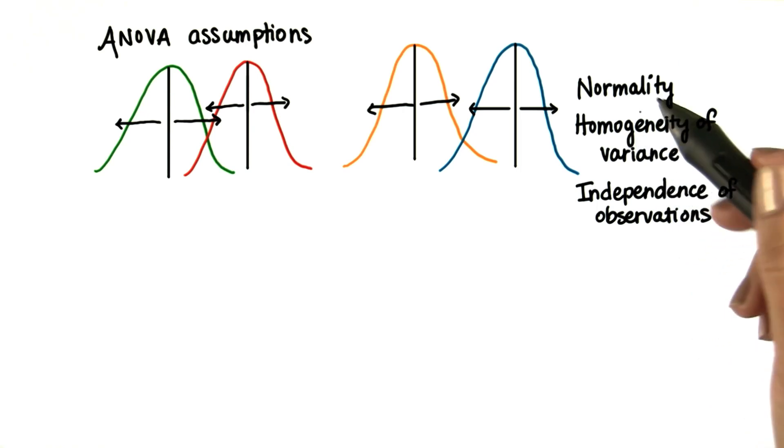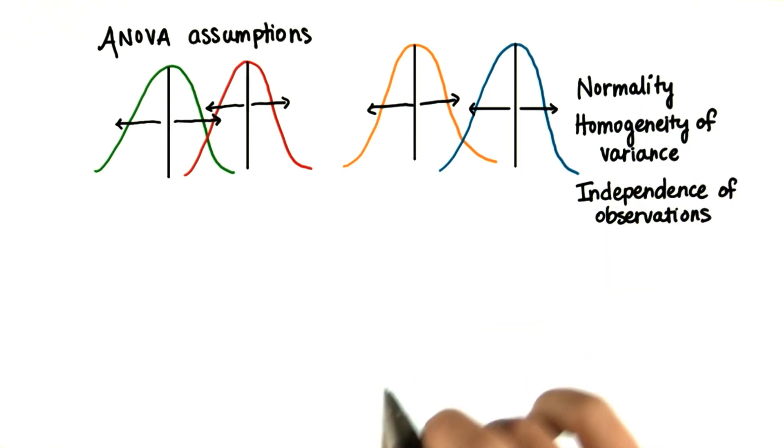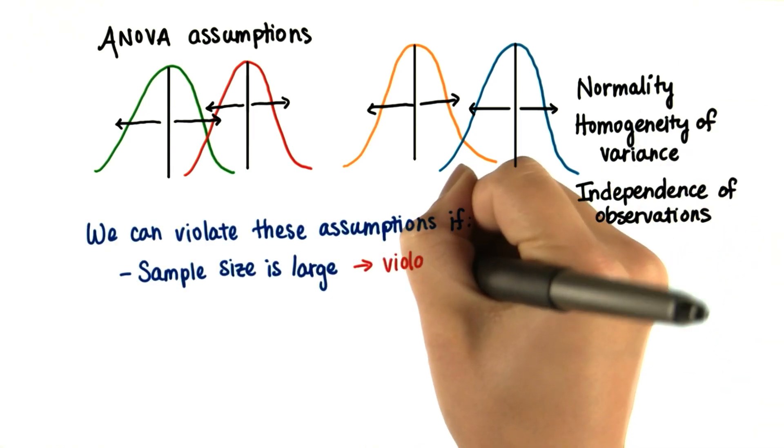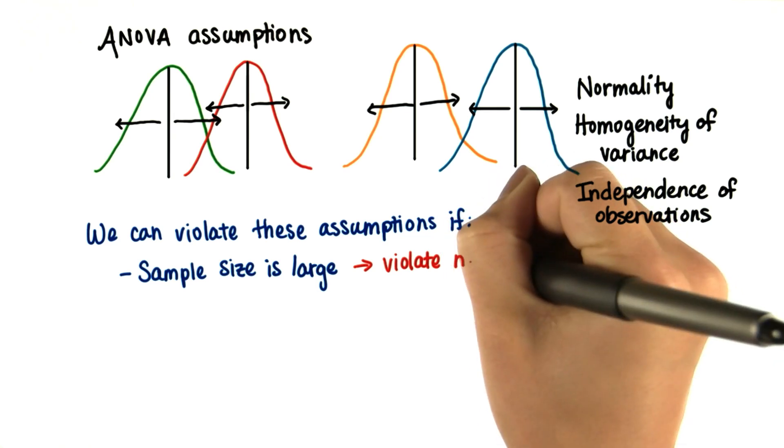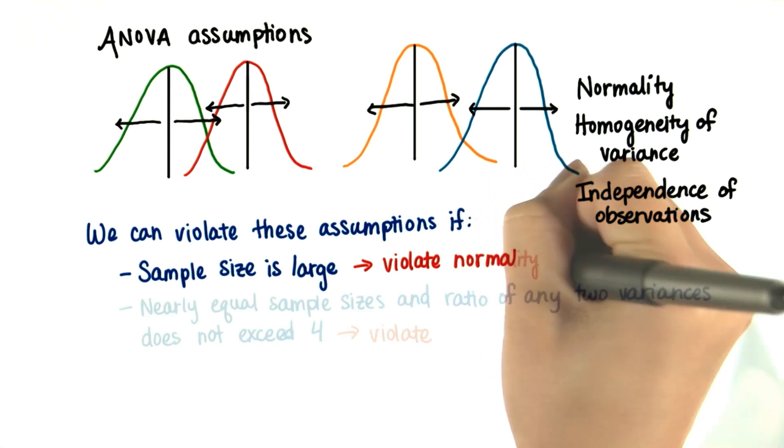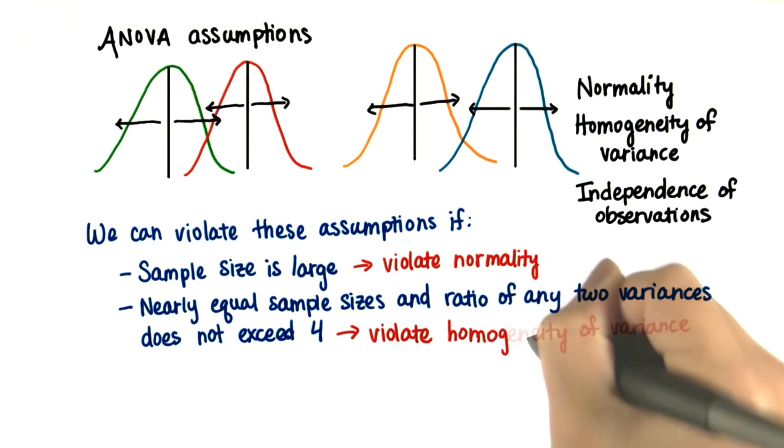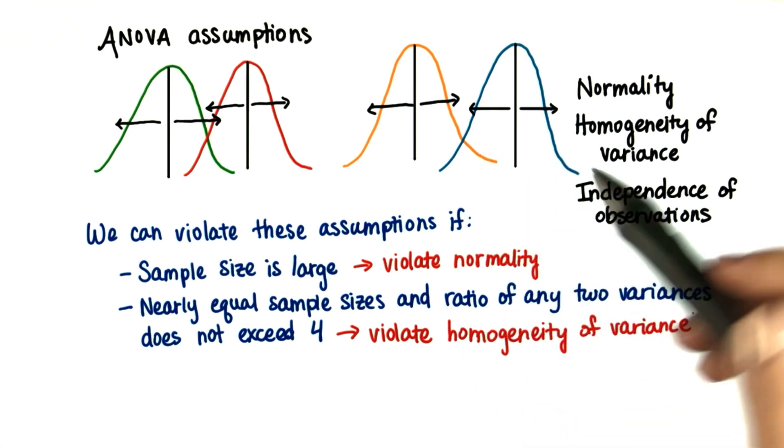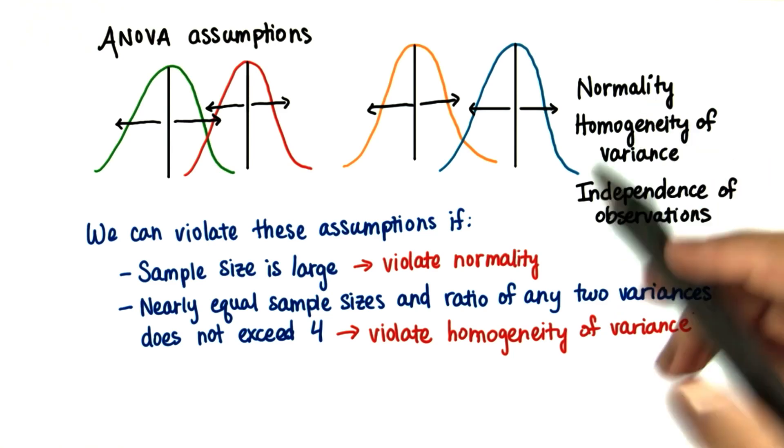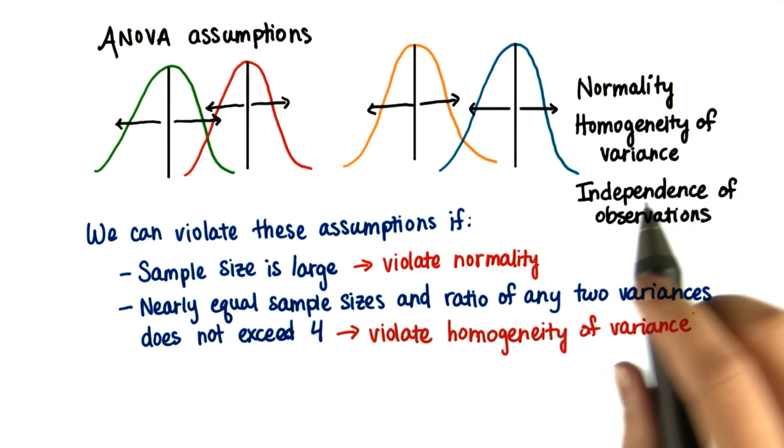However, we can violate these assumptions under certain conditions. We can violate the normality assumption if the sample size is large. We can violate the homogeneity of variance assumption if all the samples have nearly equal sample sizes and the ratio of any two variances does not exceed 4.